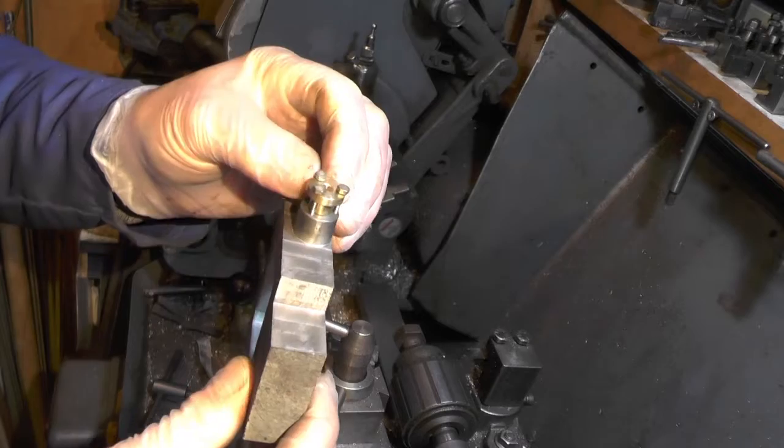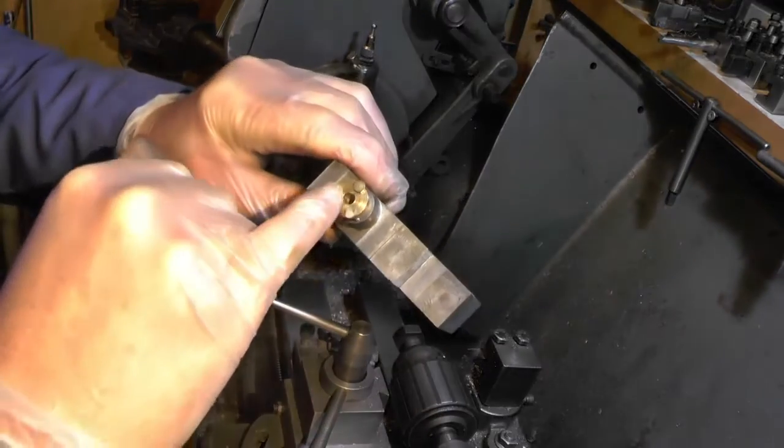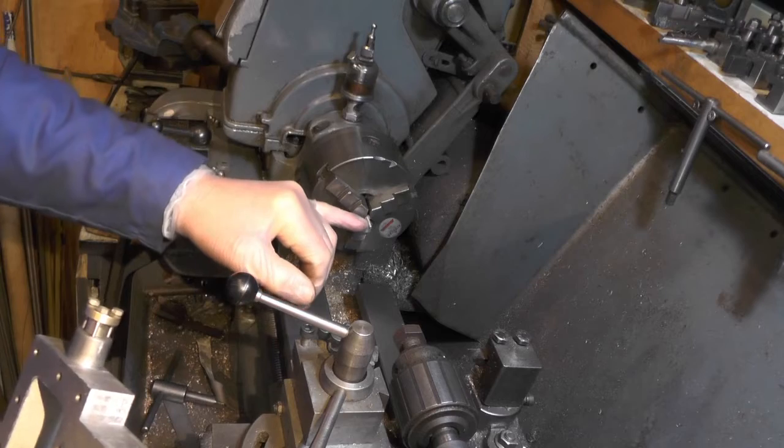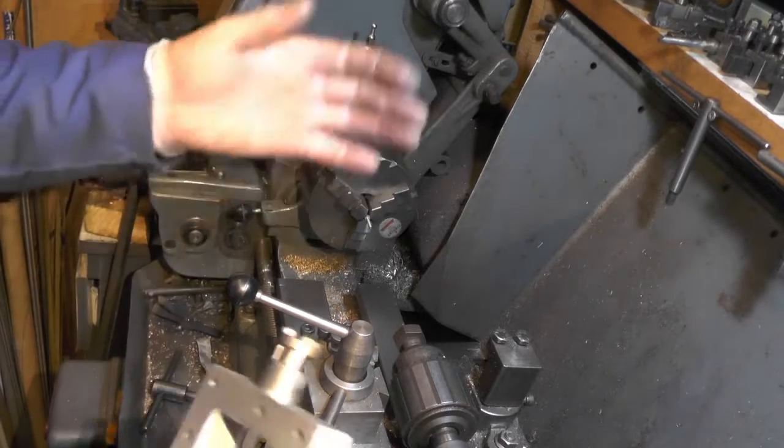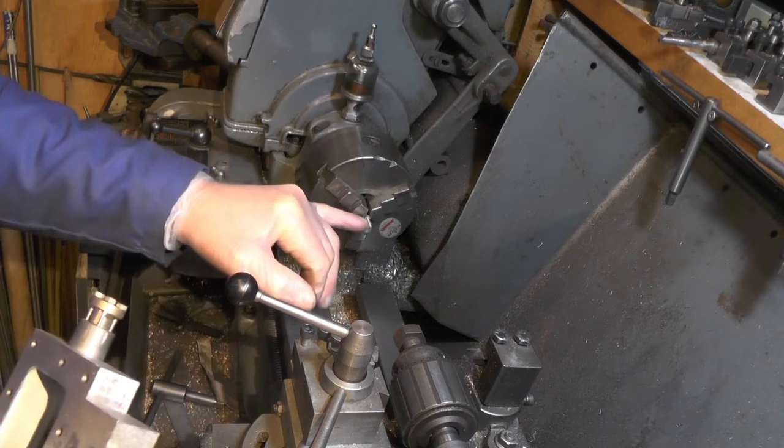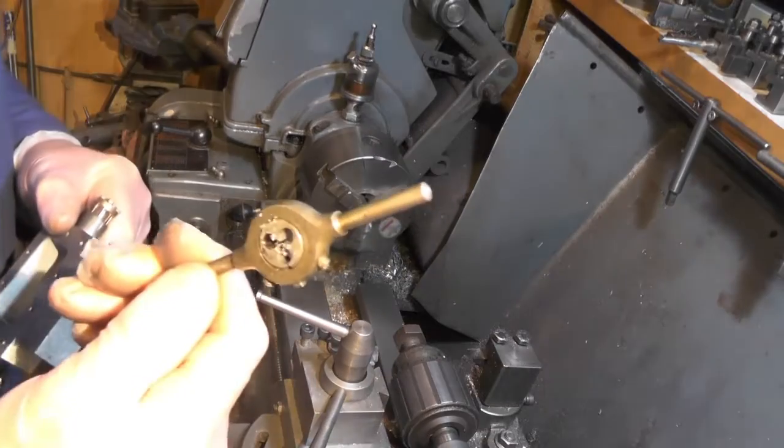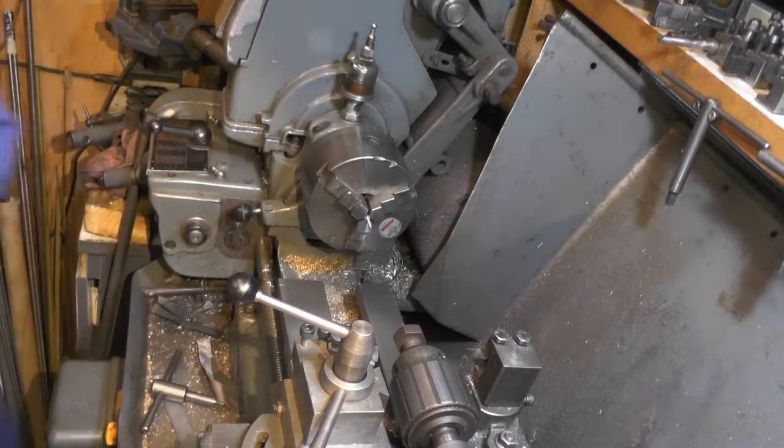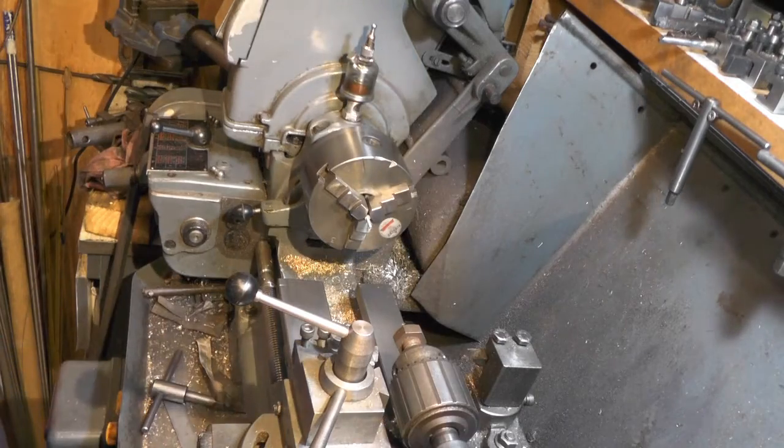I've got some 6BA set screws with a hexagon head. The root diameter of a 6BA is the outside diameter of an 8BA, coincidentally. So I'm machining the threads off a 6BA screw and then using my 8BA die I'm putting an 8BA thread back on. That saved me buying the screws because I've got plenty of these other screws in.